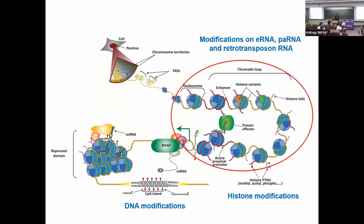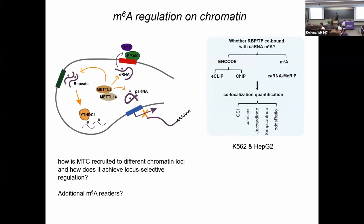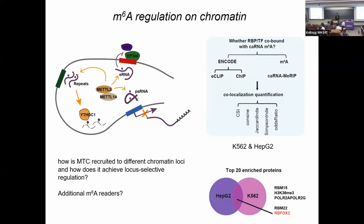When we talk about chromatin state we can't just discuss DNA or histone modifications — we now add this layer of complexity involving non-coding RNAs. We have the methyl transferase as writer, and readers. But YTHDC1 only works on retrotransposal RNA; for enhancers and promoters we need additional reader proteins. So we looked at eCLIP data and RNA-binding protein data, correlating with chromatin RNA M6A sequencing to find proteins that overlap with M6A sites.